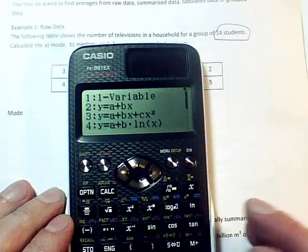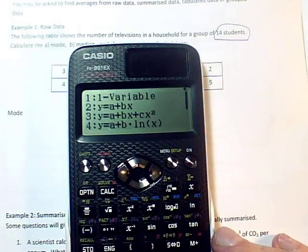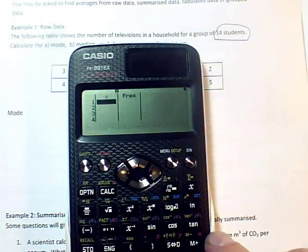And I've just got a list of a single variable. So for things like means, modes, medians, I just need to use option 1 to go into one variable statistics.